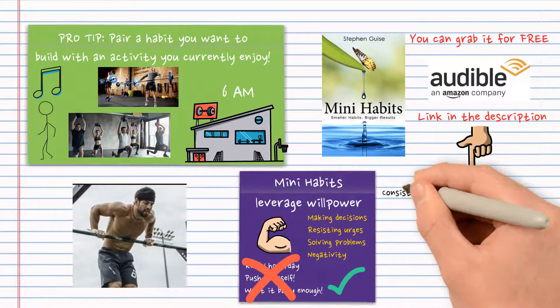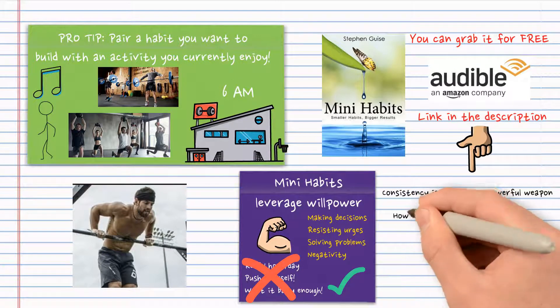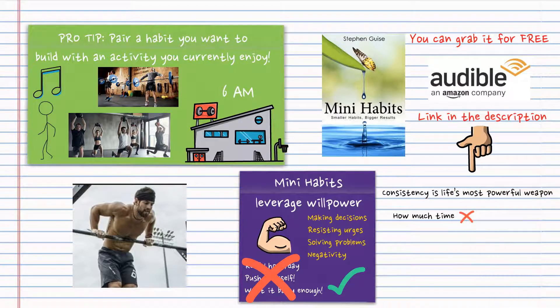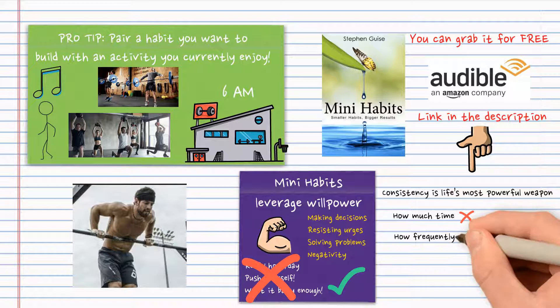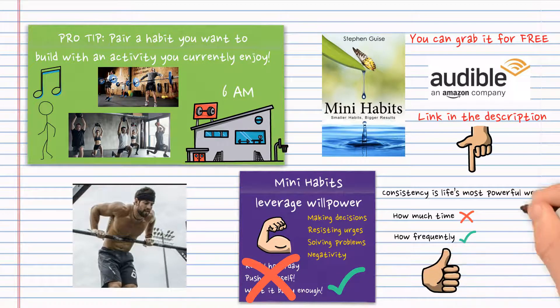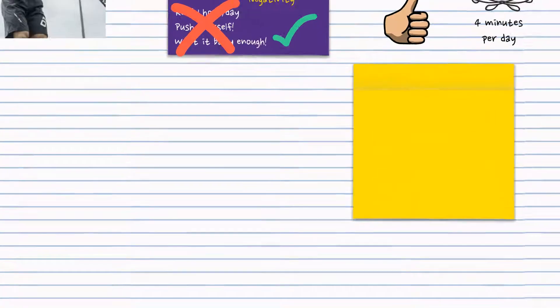Mini habits require almost no willpower to perform since they are so small, and that's what makes them powerful. Consistency is life's most important weapon. It doesn't matter how much time you practice a behavior, what matters is how frequently you do it.